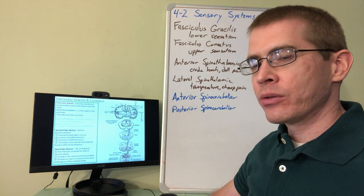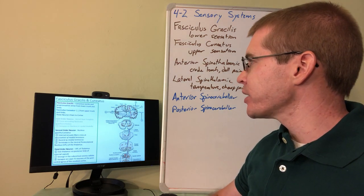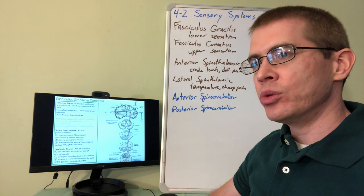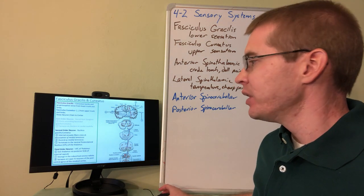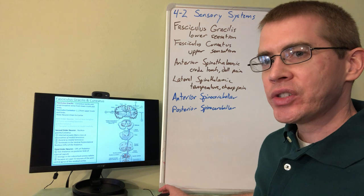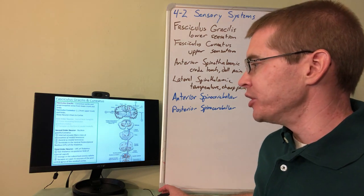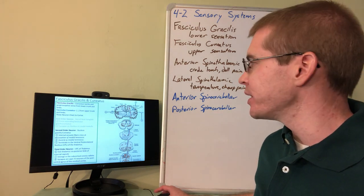The third order neuron in the thalamus then exits and projects to the cortex where it will finally synapse and you'll get that conscious sense of that information in your layer four of your cortex.